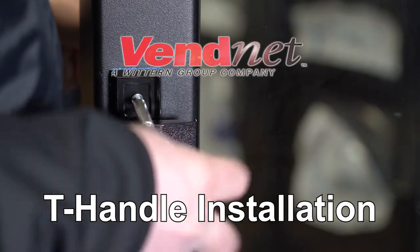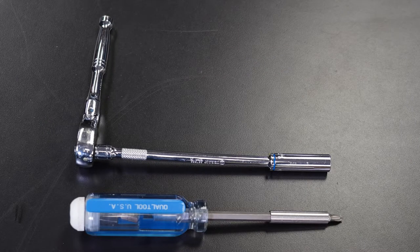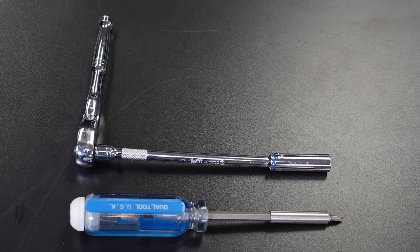Follow these steps to install and remove your vending machine T-handle. You will need a Phillips screwdriver and a 10 millimeter socket or equivalent.